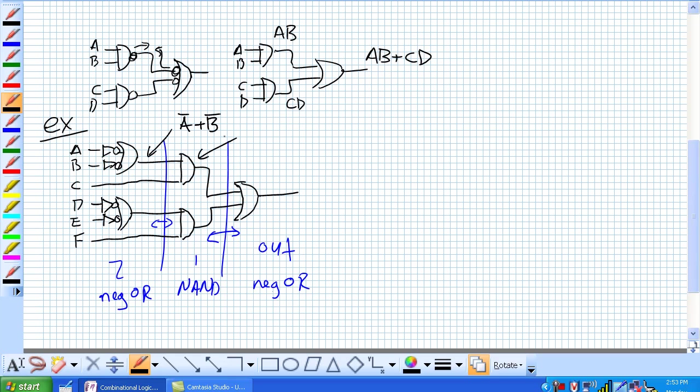This right here is going to be C and not A or not B. Now let's start back over here. What's this one going to produce? Well, this is our negative or still, so it's not D or not E. And then it's ANDed together with F.